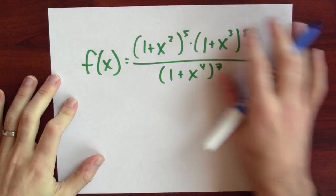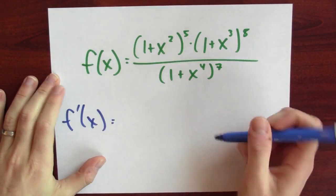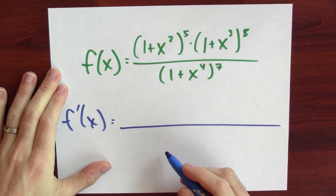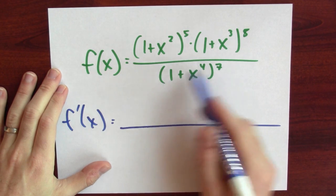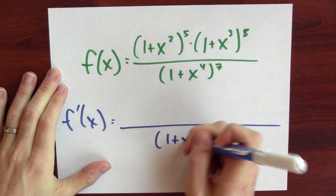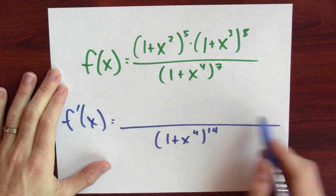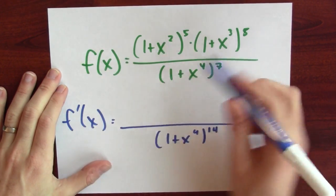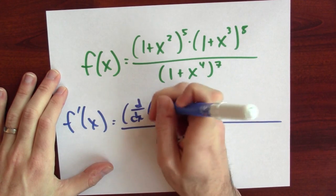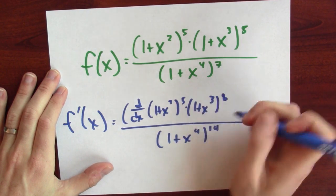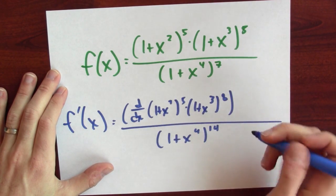In principle, there's nothing stopping you from just plowing ahead and computing the derivative. You can totally differentiate this function. What's the derivative? Well, this function's a quotient, so you can use the quotient rule. The denominator of the quotient rule is the original denominator squared, so it's going to be the original denominator now to the fourteenth power. In the quotient rule, the numerator starts off with the derivative of the original numerator. Now, the original numerator is a product, so I'll be able to do this derivative by using the product rule and chain rule.